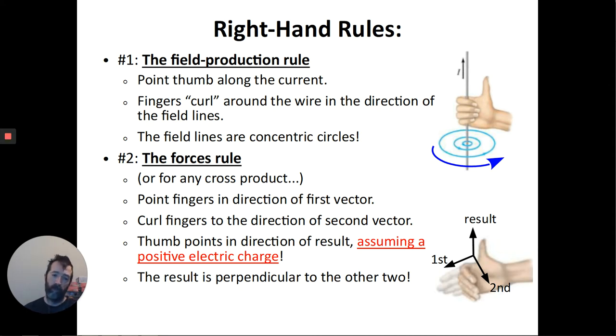And then there's a second rule we've used for looking at magnetic forces. This rule has three parts instead of only two. So you begin with your entire hand pointing in the direction of the motion of the particle. So that could be just a single charged particle or it could be a current again. But you point your whole hand in the direction of that motion.